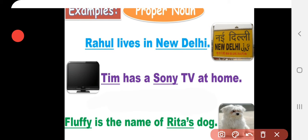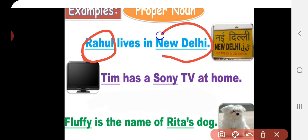First example: Rahul lives in New Delhi. What are the proper nouns here? Rahul and New Delhi. Why? Rahul is a special name given to a boy, and New Delhi is a proper noun — a special name given to a place.